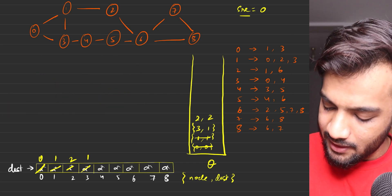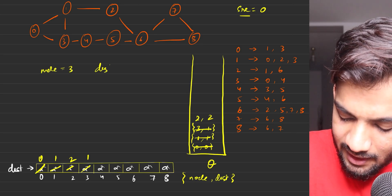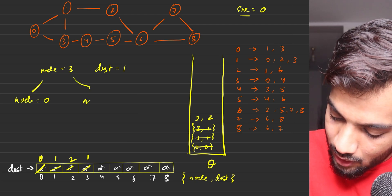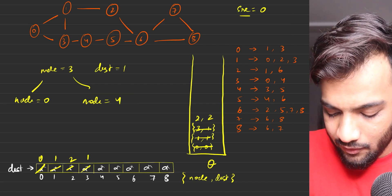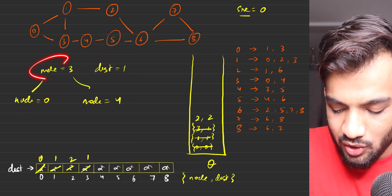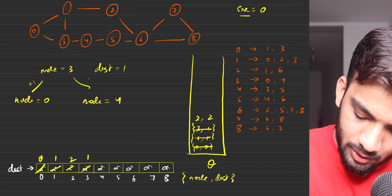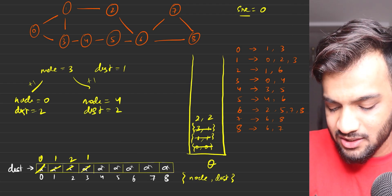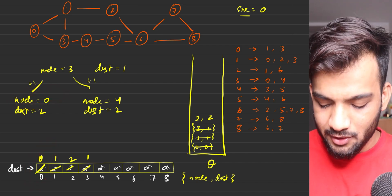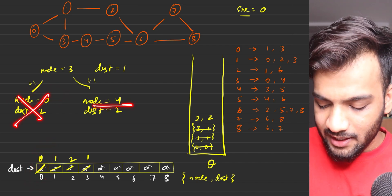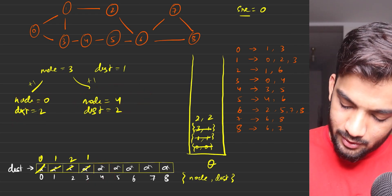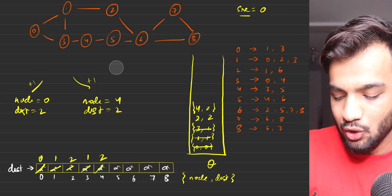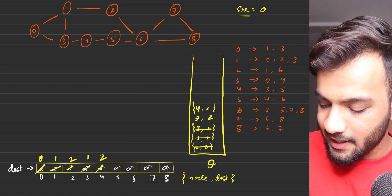Next, we process node three with distance one. From the adjacency list, node three can go to node zero and node four. Going to node zero would be distance two — already reached at zero, so discarded. Node four was at infinity, so we update it to two and push four comma two into the queue. Node three is done.